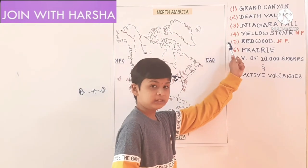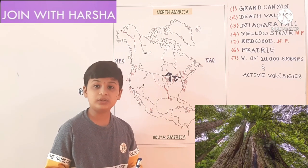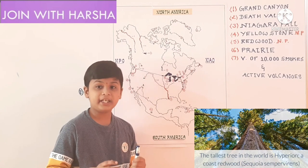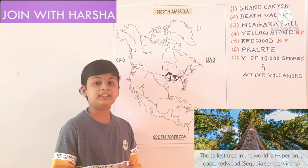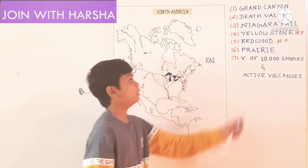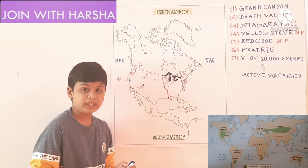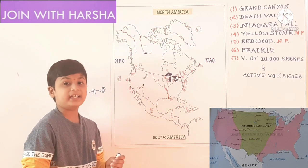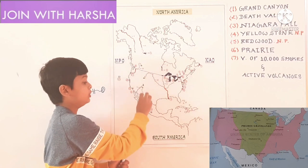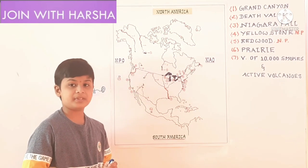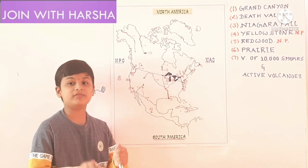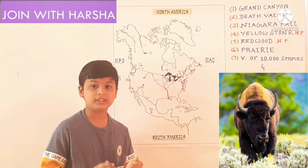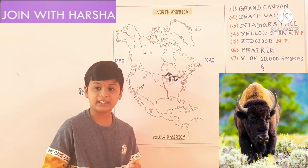Next one is Redwood National Park. In Redwood National Park, there are Redwood trees, which are the tallest and the largest trees in the world. Hyperion is the highest tree in the world, with 379.1 feet height, and it is in Redwood National Park. Next one is Prairies. The temperate grassland in North America continent is called Prairies. Prairie grassland extends from Canada to Mexico in the interior of North America. Wheat and maize are the main crops. This grassland is known as the wheat basket of the world. The American bison, or American buffalo, is the iconic animal of this grassland and the national mammal of USA.